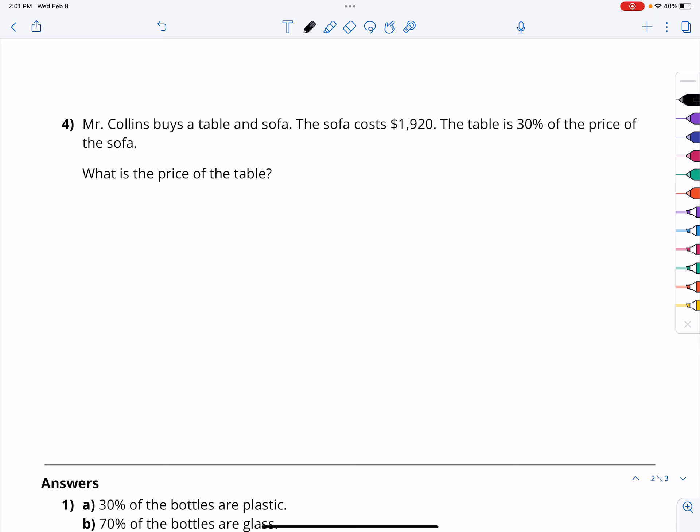Mr. Collins buys a table and sofa. The sofa costs $1,920. The table is 30% the price of the sofa. So, we have a table, and we have a sofa. The sofa costs $1,920. And the table here, this is 30% of that. The price of the table is then 30% of $1,920. If we consider this to be 100%, we could start there. 100% is $1,920. So, to get to 30, I'm going to first go to 10, because then I can multiply that by 3.